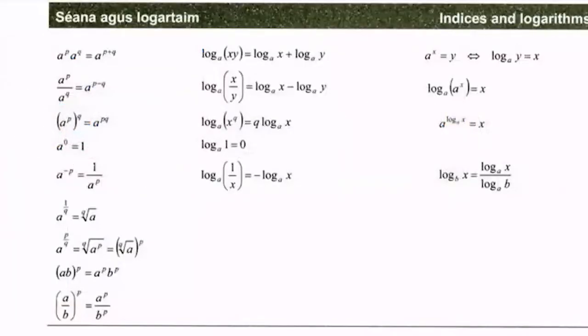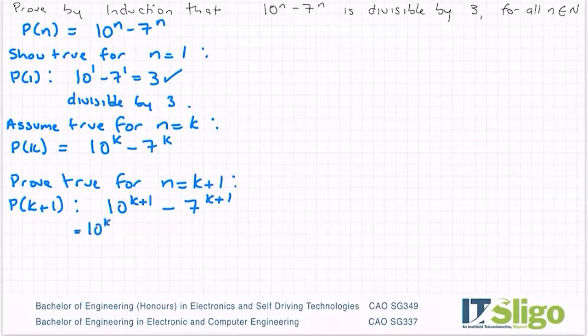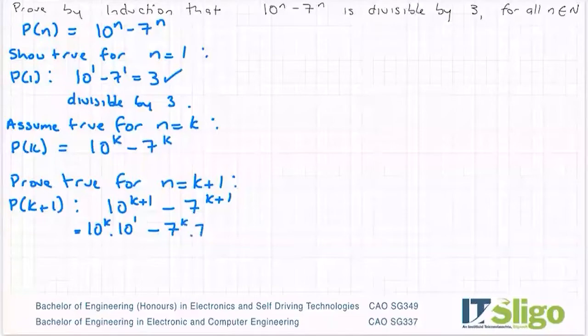I'm going to break up the indices using this rule here. When the two indices are added, I can break them out into the same number one for each of the powers. So in other words, it would be 10 to the power of k by 10 to the power of 1 and 7 to the power of k by 7 to the power of 1.